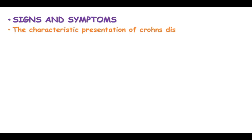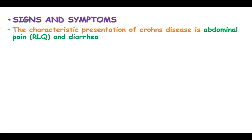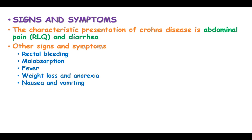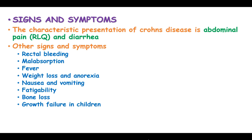The signs and symptoms of Crohn's disease characteristically present as abdominal pain in the right lower quadrant and diarrhea. Other signs include rectal bleeding, malabsorption, fever, weight loss and anorexia, nausea and vomiting, fatigability, bone loss, and growth failure in children.